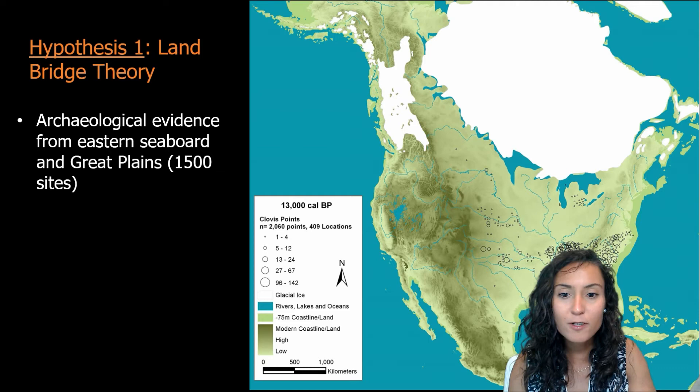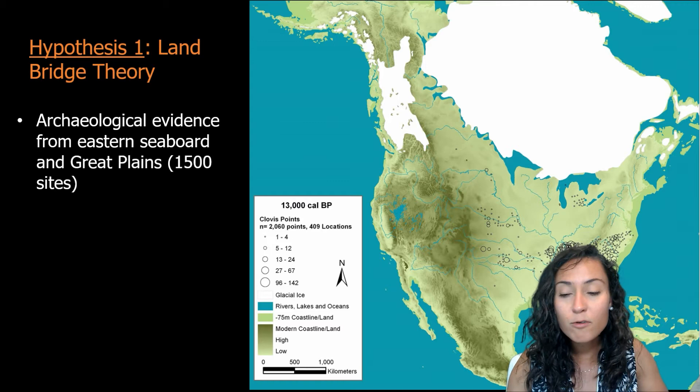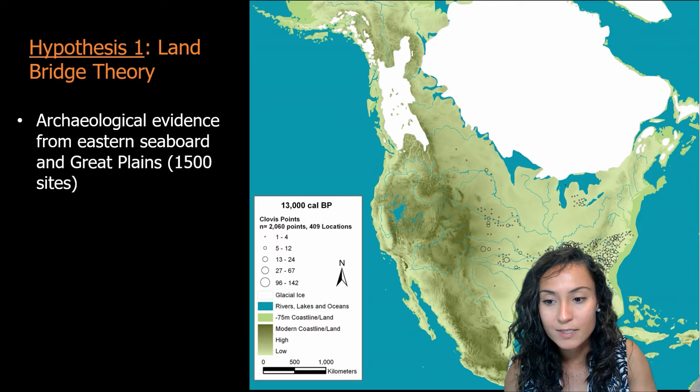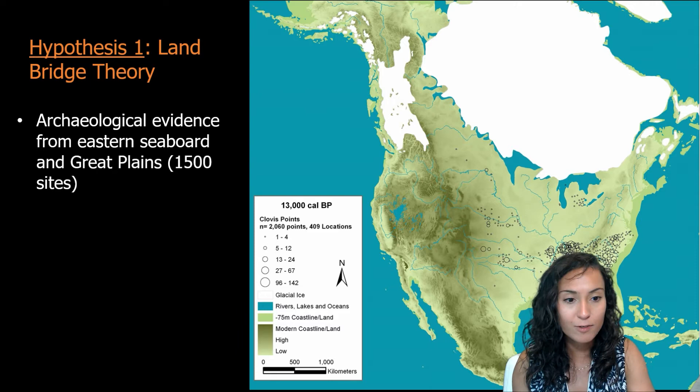Archaeological evidence for the land bridge hypothesis comes from sites in eastern North America and the Great Plains. About 11,200 BC, a highly distinctive hunter-gatherer culture designated Clovis developed. The term Clovis refers to the fact that this early form of material culture was found near Clovis, New Mexico in 1932. To date, there are roughly 10,000 Clovis points discovered, scattered all across North America in about 1,500 locations.